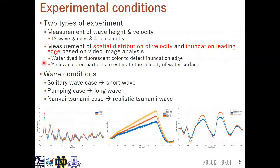We used red dye to detect the inundation edge, used a PIV system, and used yellow-colored particles to estimate the velocity of the water surface. Our wave conditions include a solitary wave case, a bore wave case, and a Nankai tsunami case. These three cases correspond to a short wave, a long wave, and a realistic tsunami wave, respectively.